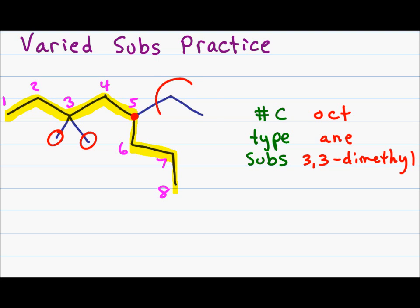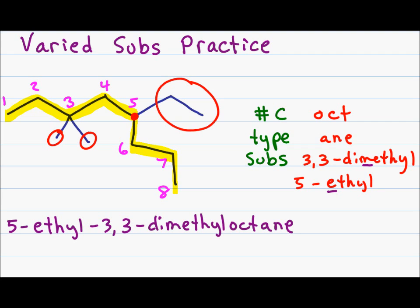My second substituent on carbon five has two carbons, which is an ethyl group. Alphabetizing again, I don't look at the word di — I look at M for dimethyl and E for ethyl. E comes before M, so ethyl comes before dimethyl, for a final name of 5-ethyl-3,3-dimethyloctane. Notice that I didn't capitalize any letters because when you write a name you keep it all in lowercase.